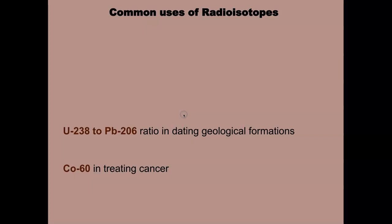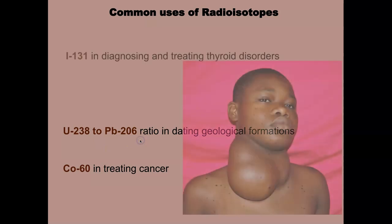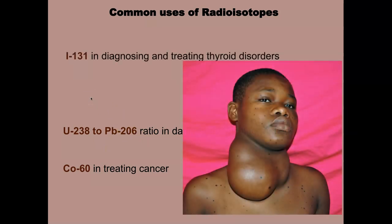Uranium-238 and uranium-236 are used for dating geological formations. Iodine-131 is used for diagnosing and treating thyroid disorders — a goiter is caused by iodine deficiency, leading to a swollen thyroid. We don't see this in our society because we add iodine to table salt (NaCl) as a supplement. If you look at table salt it says iodine is added — that's why, to prevent iodine-deficiency goiters.